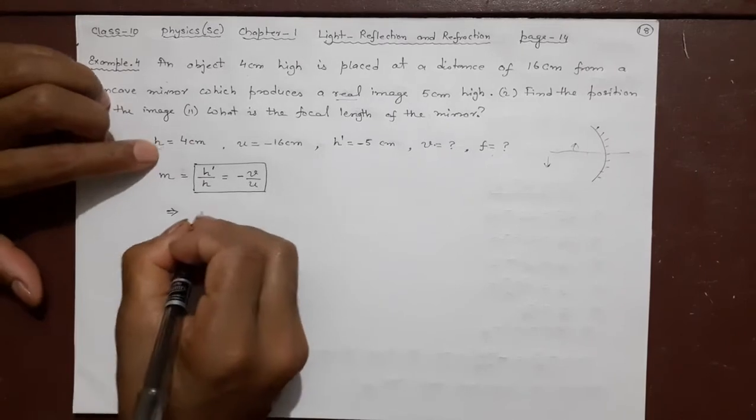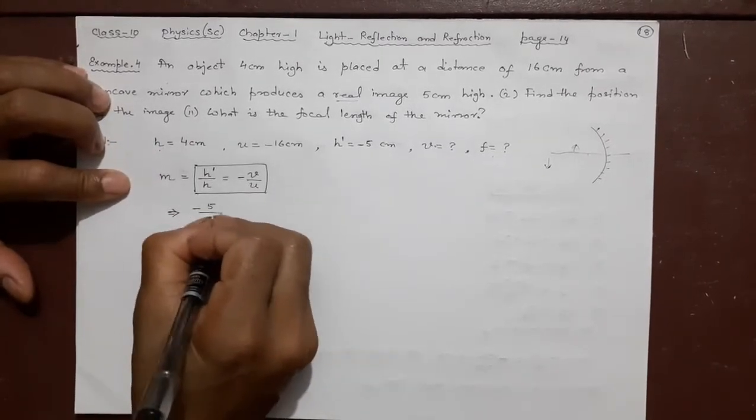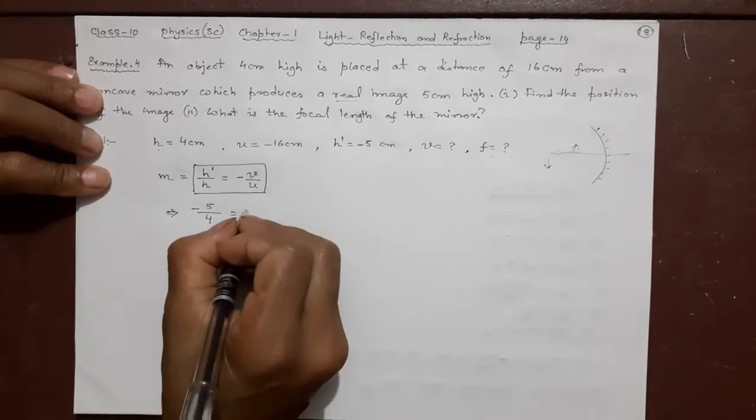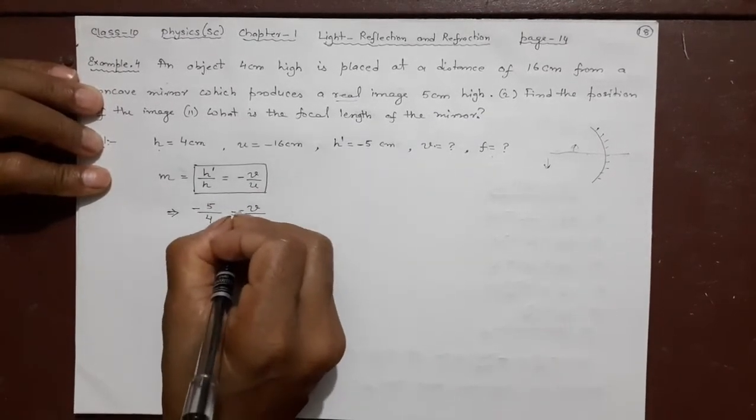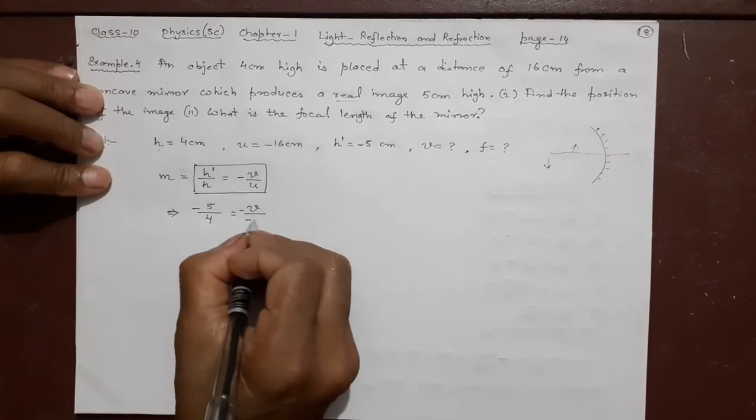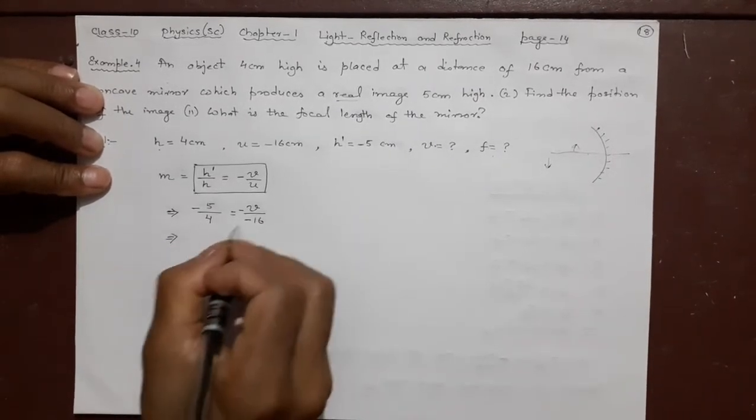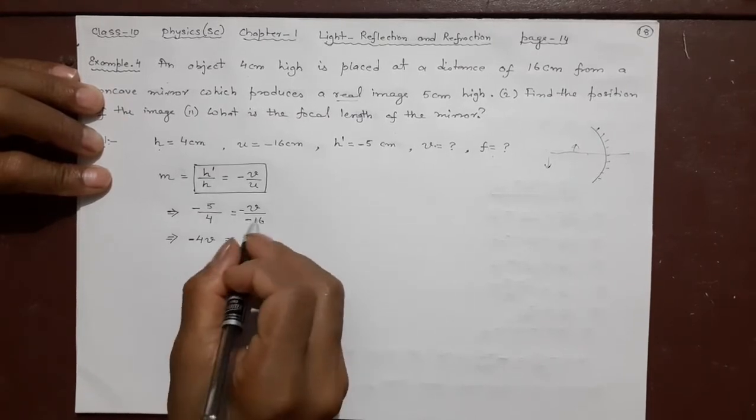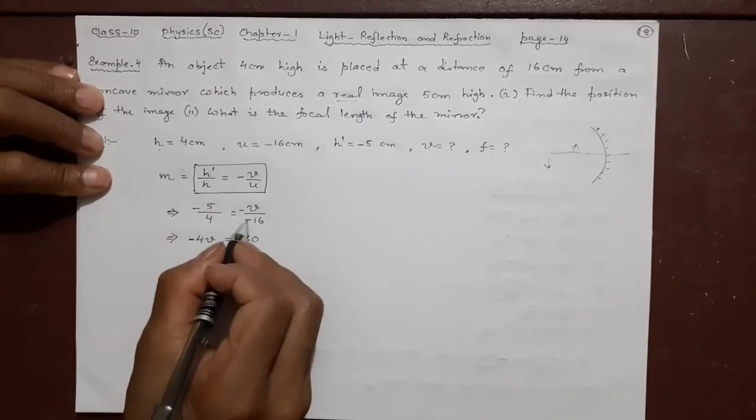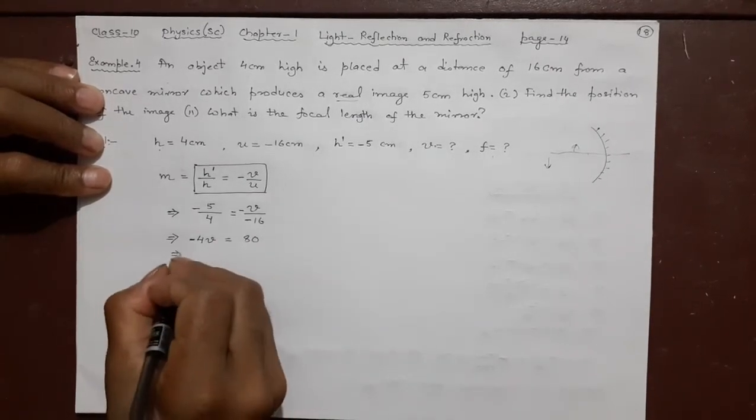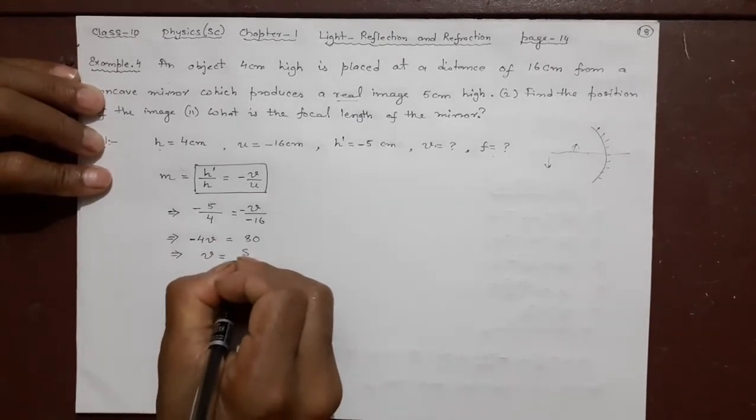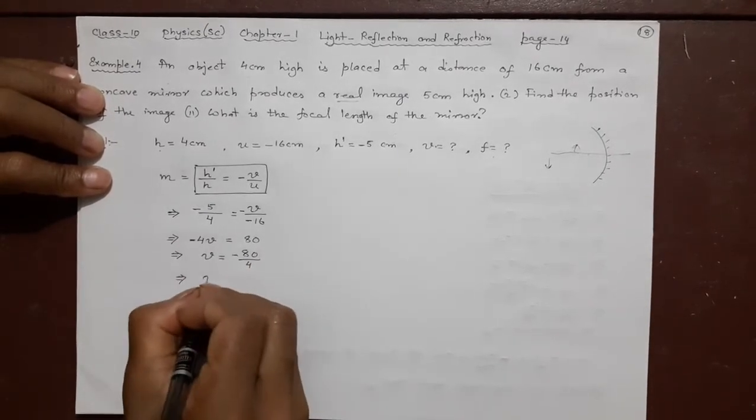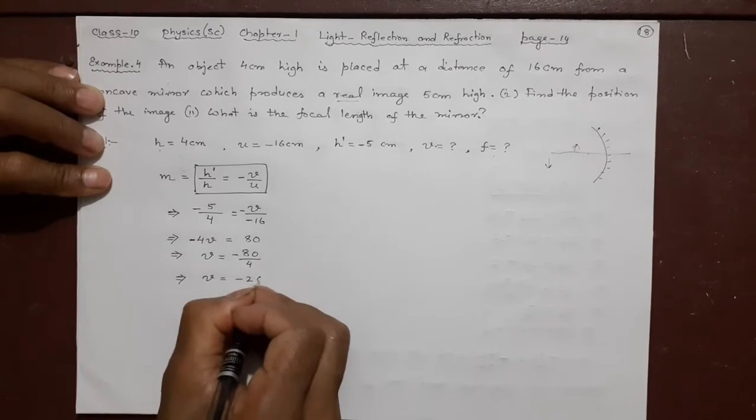We are using this part. So what is this? H dash is minus 5. H is 4. Then V is what? We do not know. We will find that. U is minus 16. See all this. Only V is unknown. Cross multiply minus 4V. Cross multiply 16, 5 is 80. Plus because minus into minus is plus. Now what it gives you? V is equal to 80 by minus 4. Can come in the numerator. V is equal to minus 20 centimeter.